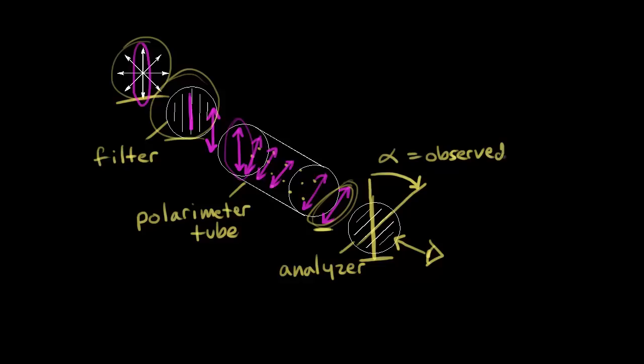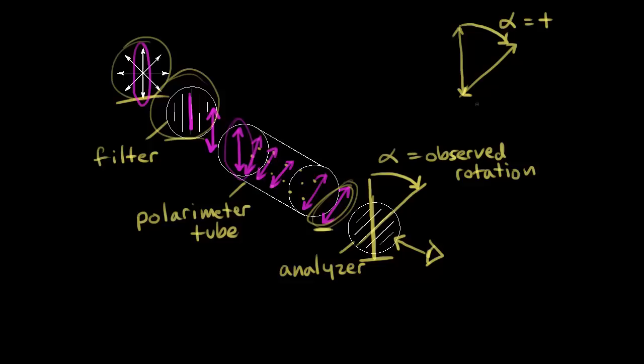In this case, we had to rotate the analyzer to the right. The plane of light was rotated to the right when it encountered our compound, so we rotated the analyzer to the right. That is said to be an observed rotation that is positive — a positive, clockwise rotation. This is also called dextrorotatory.